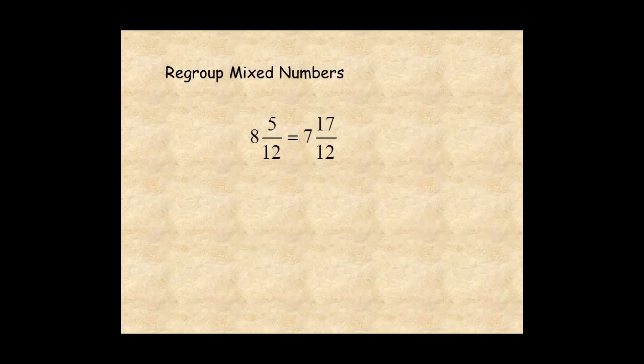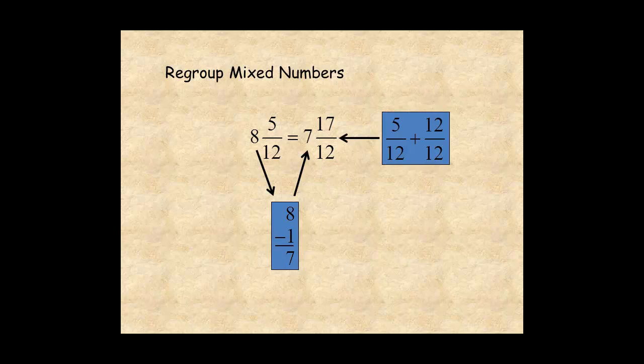Finally, 8 minus 1 equals 7, and 5 twelfths plus 12 twelfths equals 17 twelfths.